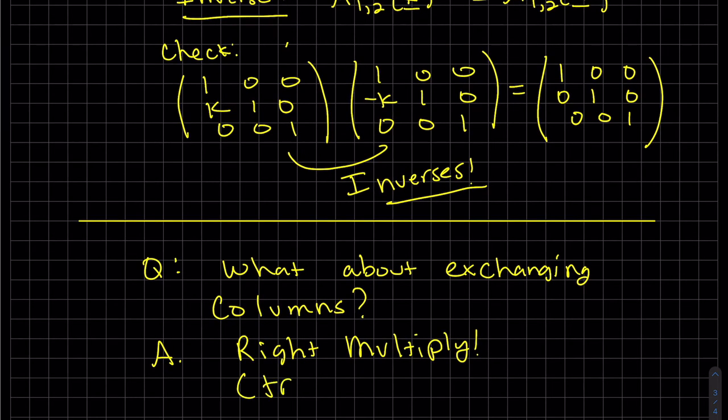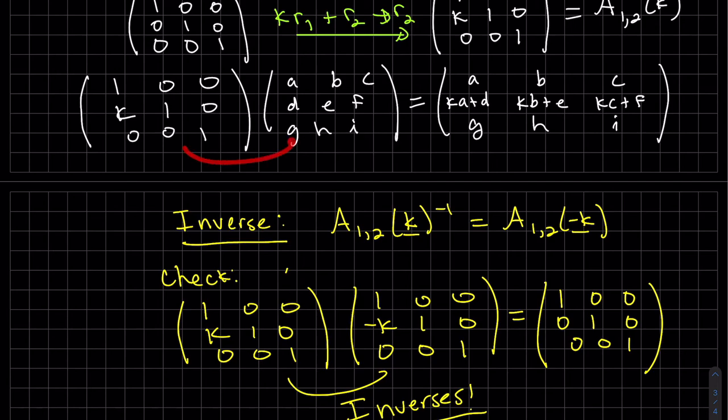Well, we would right multiply. You can try it on your own. So if we were to flip these two and right multiply, you can see it would do that operation to the column, not the row.